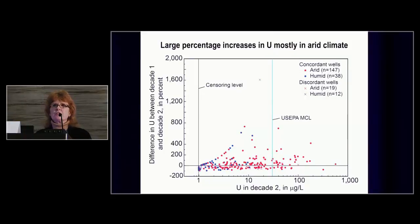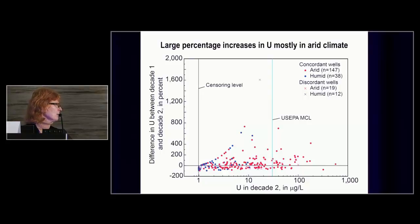On the same graph with different symbology, I've plotted concordant versus discordant wells by climate. The red arid-zone concordant wells tend to be at higher concentrations and make up a good proportion of the wells having large increases in uranium concentration. In contrast, humid environment wells in blue tend to cluster at low concentrations and low increases in uranium concentration.